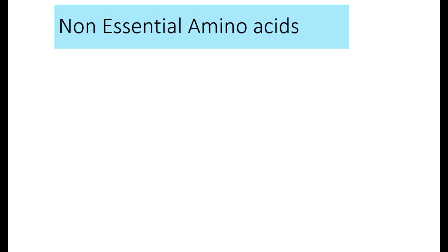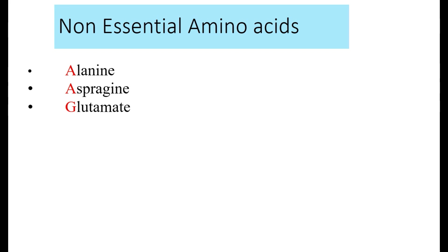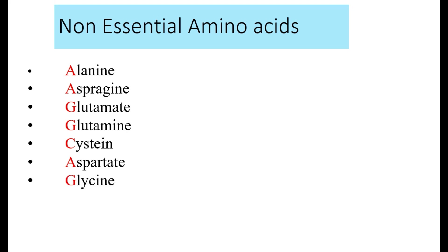First of all, what are non-essential amino acids? Here is a list: alanine, asparagine, glutamate, glutamine, cysteine, aspartate, glycine, tyrosine, proline, and serine. These are the names of the non-essential amino acids.